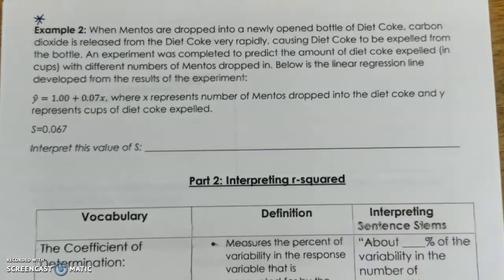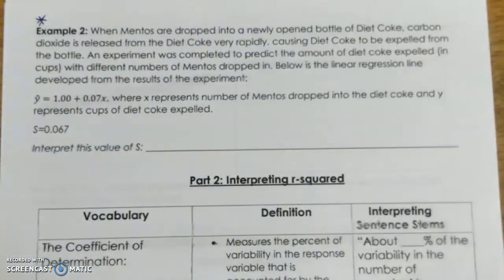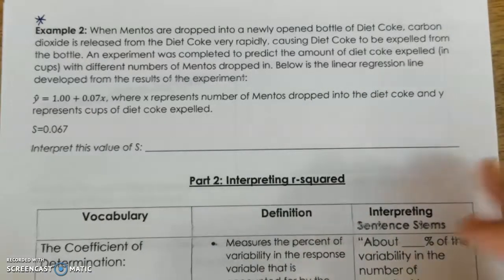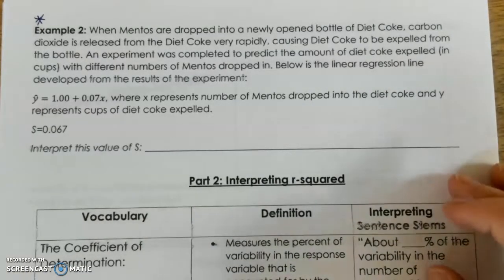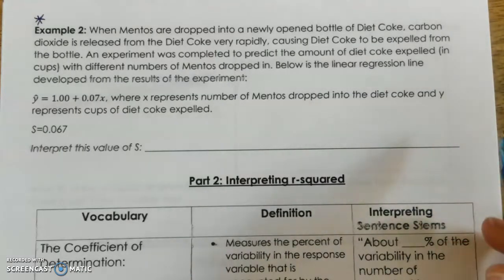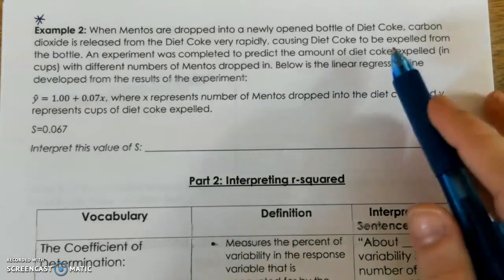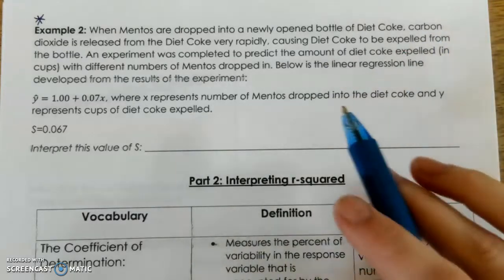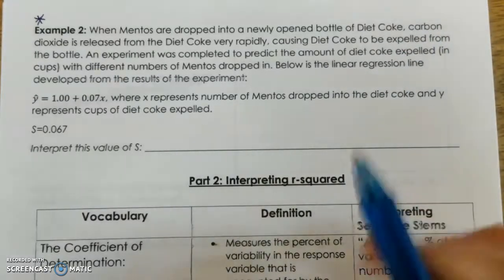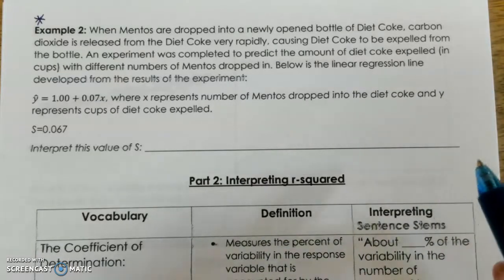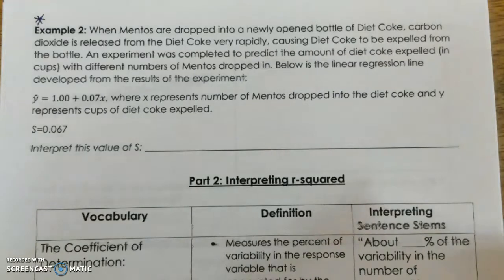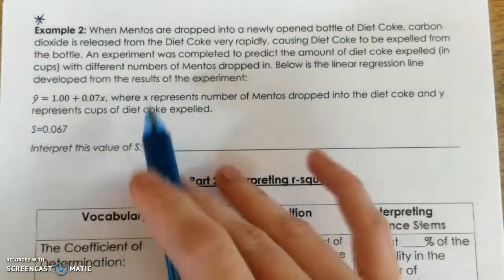Okay, you should have tried this problem on your own, and now we will go through it together. All right, so when Mentos are dropped into a newly opened bottle of Diet Coke, carbon dioxide is released from the Diet Coke very rapidly, causing it to be expelled or shoot out of the bottle. An experiment was completed to predict the amount of Diet Coke that shoots out of the bottle in cups with different numbers of Mentos dropped in. I was going to do this experiment for you, but I figured it would take too long, and you guys wouldn't like to see five videos of me getting Diet Coke all over my living room. So instead, we'll just have to rely on the data that they collected.